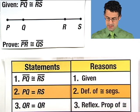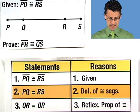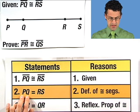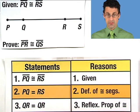We begin by noticing that we're given that PQ is congruent to RS. Thus, by the definition of congruent segments, we see that the length of PQ is equal to the length of RS.